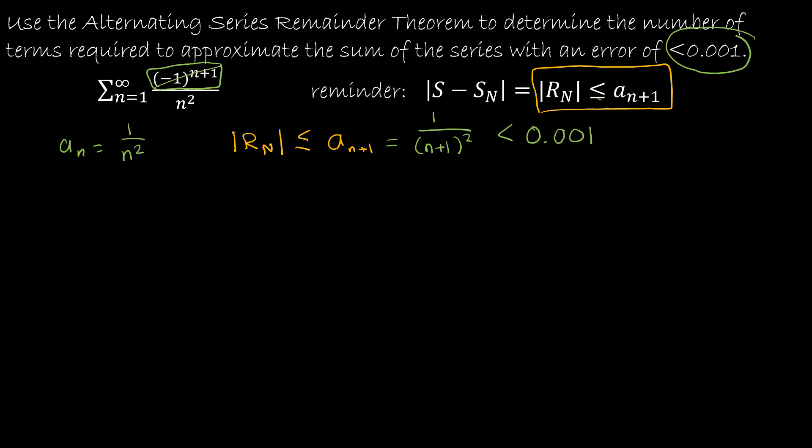This is what I'm going to solve. So from here, the good news is it's just algebra. I'm going to take each side and multiply it by n plus 1 quantity squared. And on the left-hand side, that gives me 1 is less than 0.001 times n plus 1 quantity squared. I'll divide each side by 1 one-thousandth.